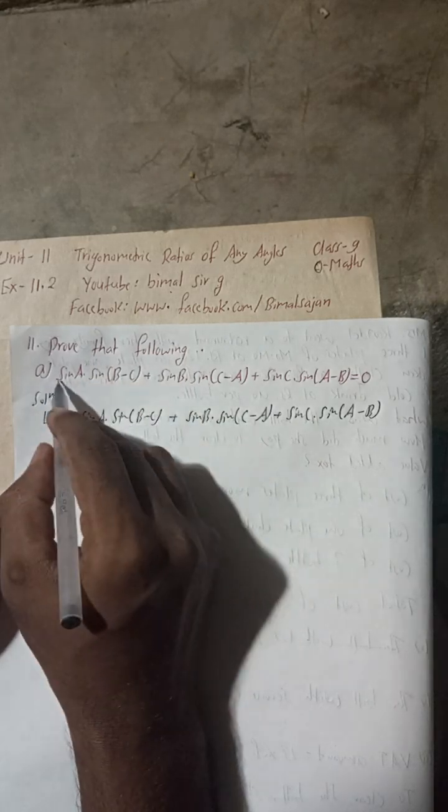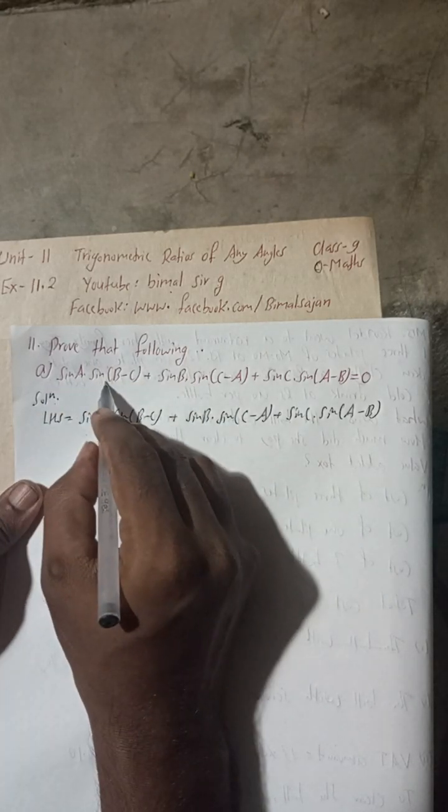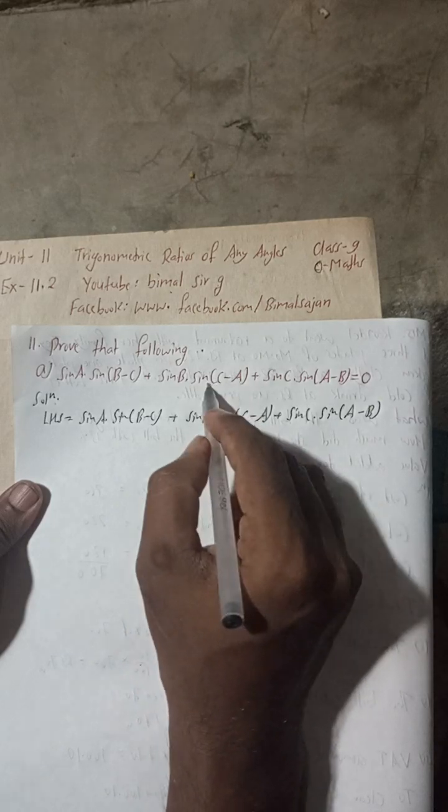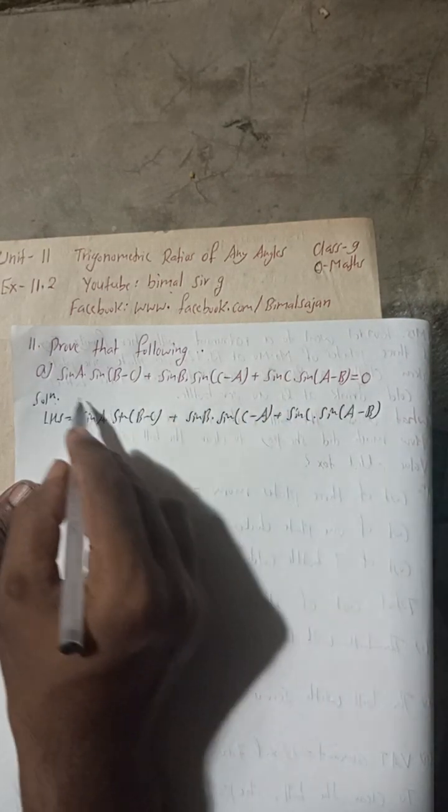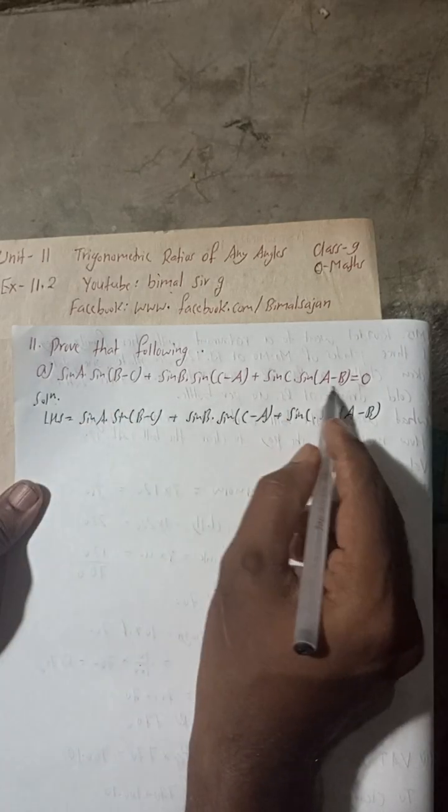Here is proof that following: sin A into sin B minus C plus sin B into sin C minus A plus sin C into sin A minus B is equal to 0. So I have taken LHS is equal to this part.